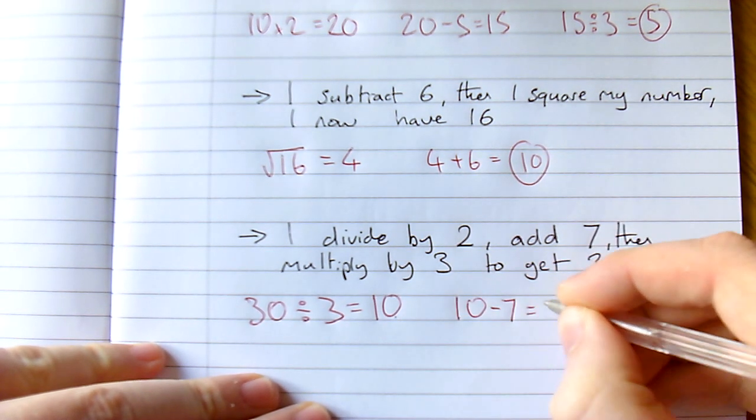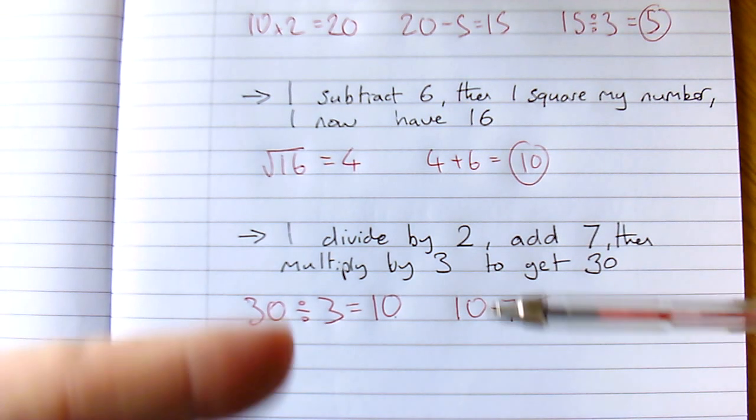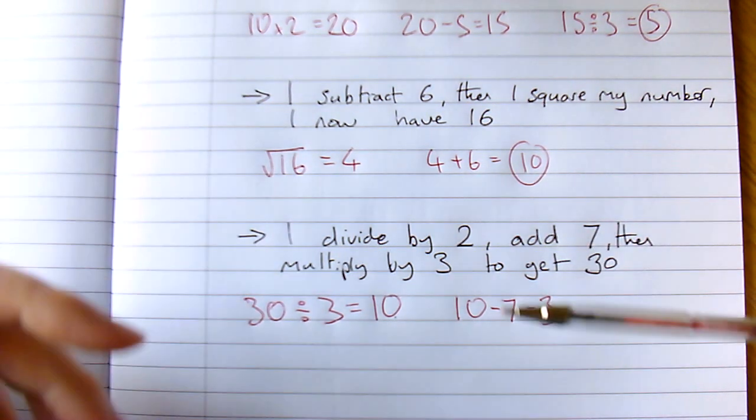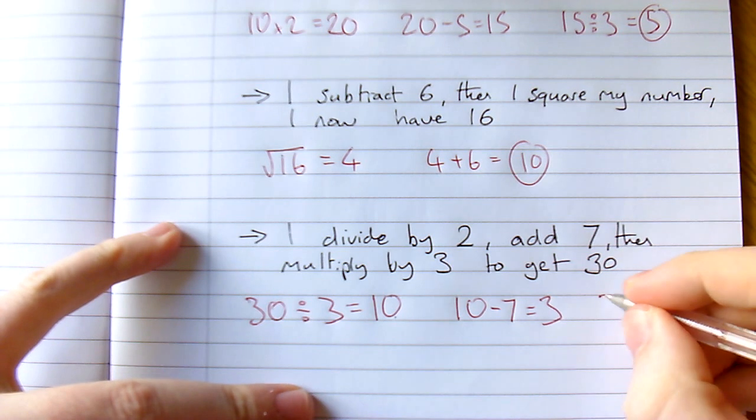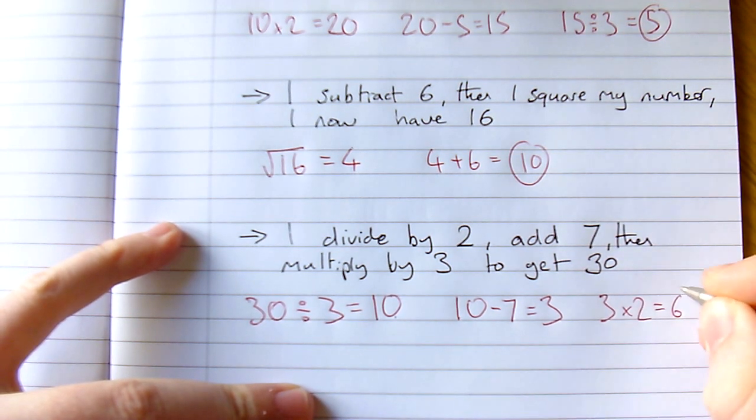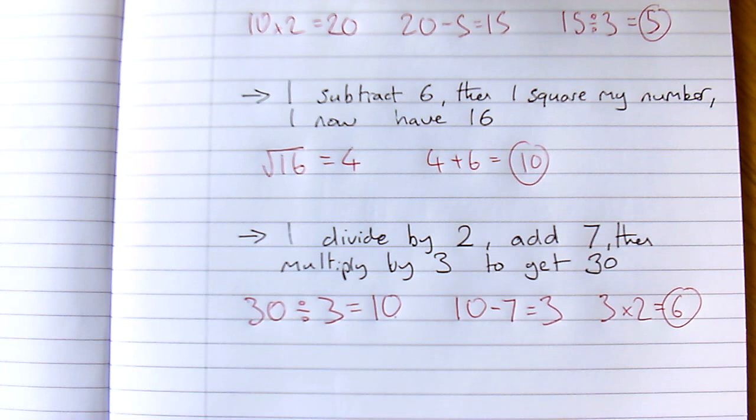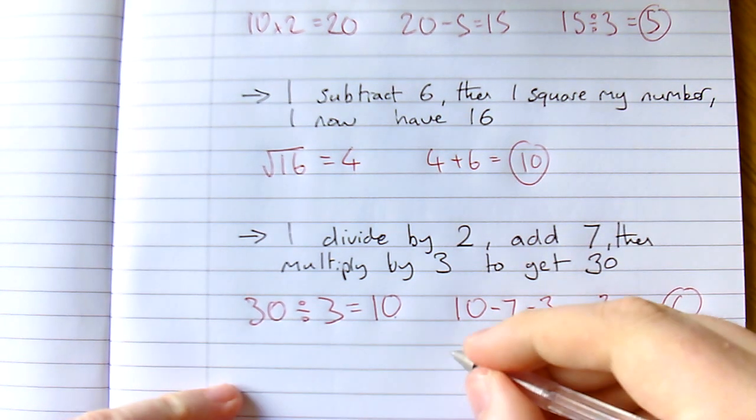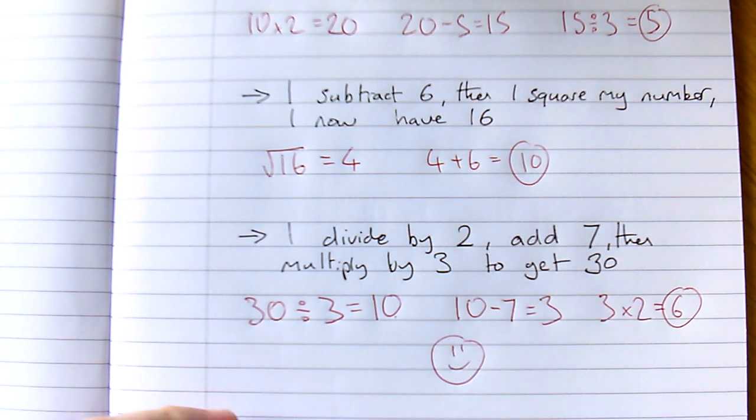The step before that was to divide by 2, so the opposite of that would be times by 2. 3 times 2 equals 6. And that is how I approach thinking of a number problems. Thank you.